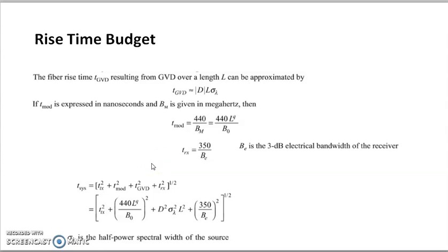In a digital link, the type of format used for transmitting the signal — whether RZ format or NRZ format — affects the bandwidth. The transmission rate changes depending on the format used, so we specifically need to identify what type of bit rate we are using.